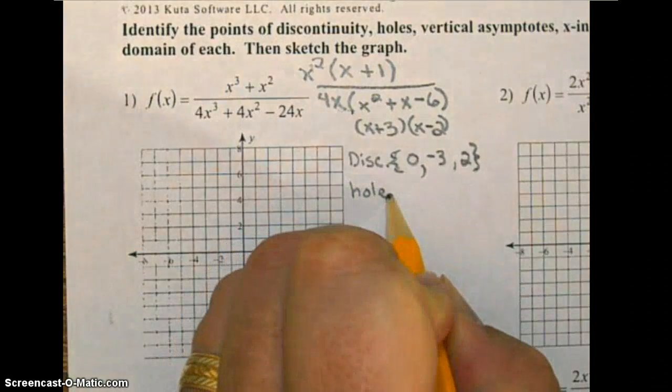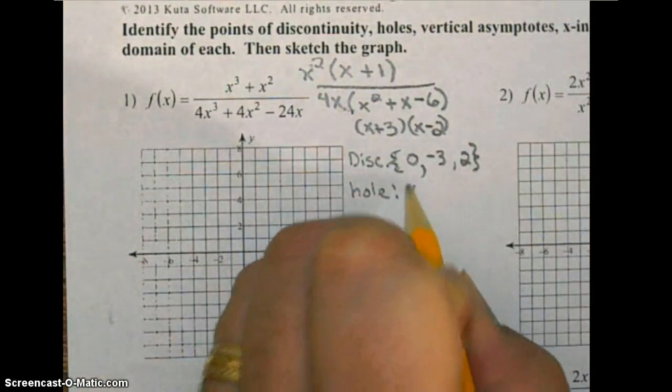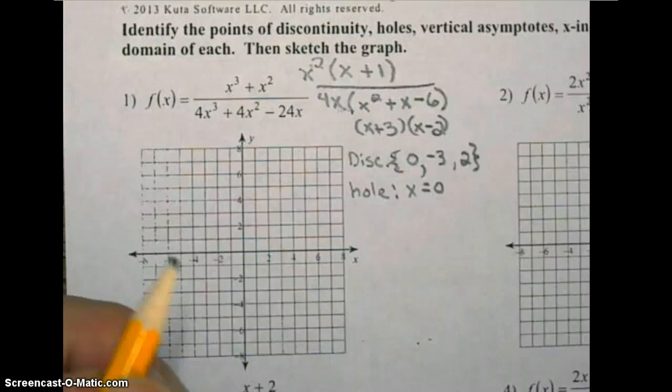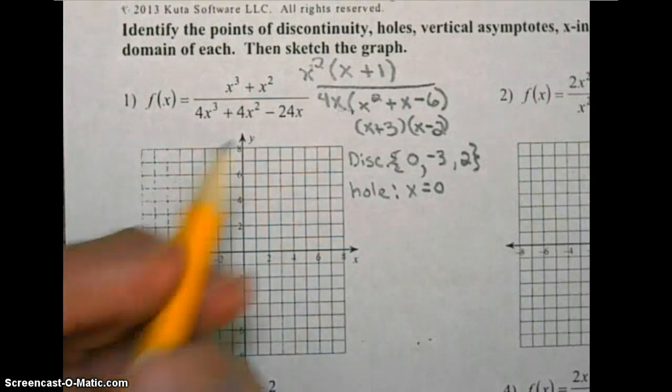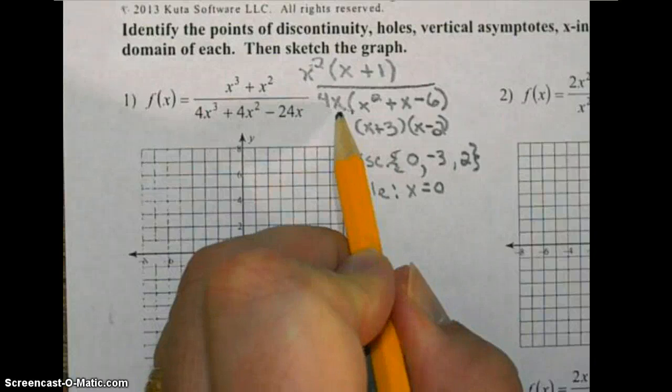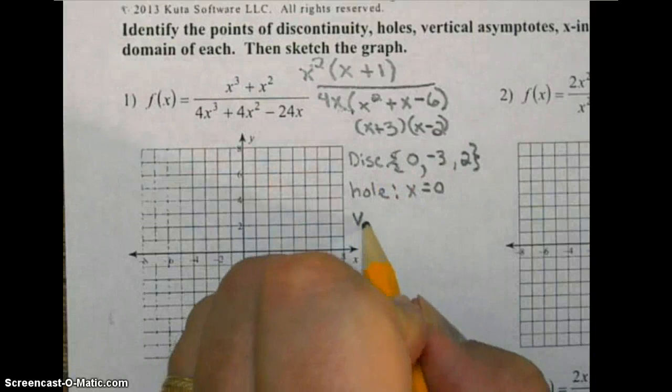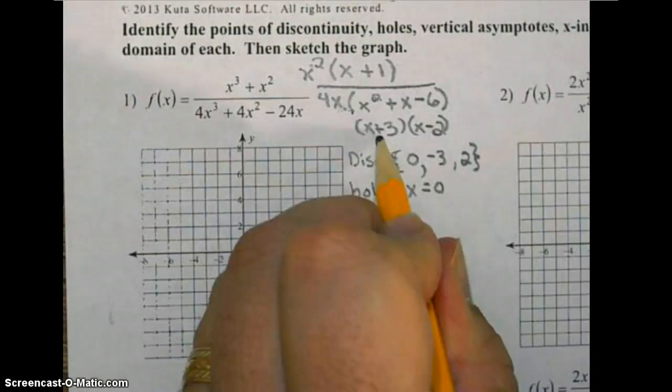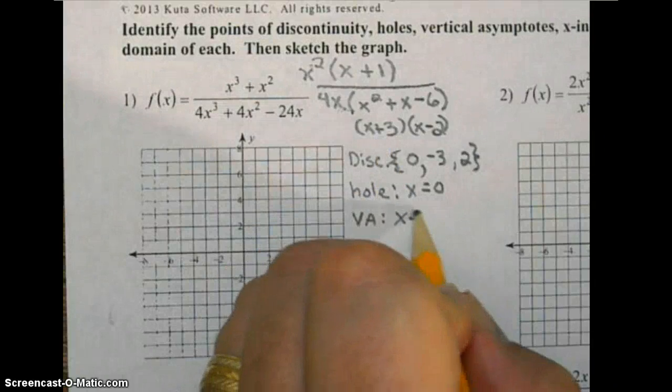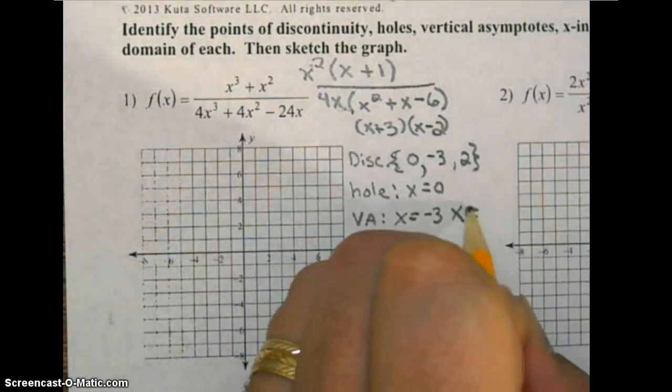Vertical asymptote. Since this factor represents a hole, this discontinuity represents a hole, what we're left for vertical asymptotes are x equals negative 3 and x equals 2.